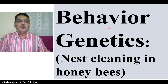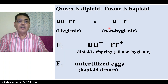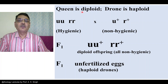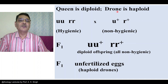Honeybees are social insects. In a honeybee colony, three different types of members are there. There is a single fertile queen that is always diploid — the diploid chromosome number in the queen will be 32. The male individuals are known as drones. They are haploid; they develop from unfertilized eggs through parthenogenesis and possess only 16 chromosomes.